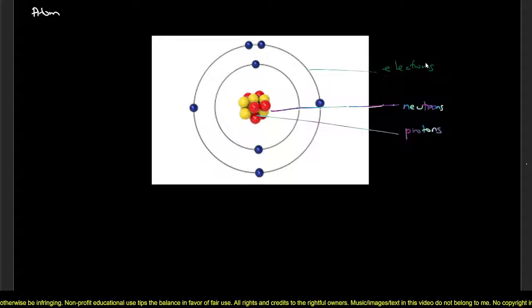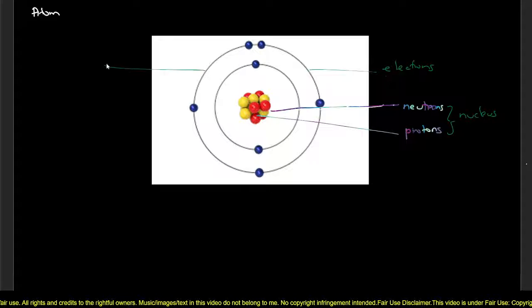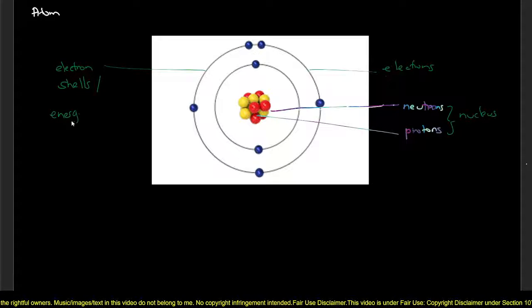The neutrons and protons, as you can see on the diagram, are tightly bound together such that we call this the nucleus. The electrons are outside of the nucleus and are found in what is referred to as electron shells or energy levels.